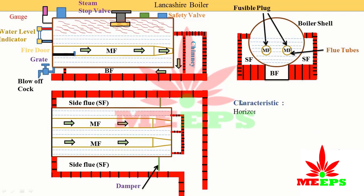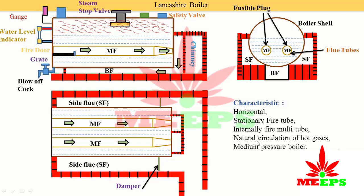Key characteristics of the Lancashire boiler: it is horizontal because its shell is horizontal. It is a stationary fire tube boiler — fire is inside the tube, and stationary means it is not movable. It is internally fired because the furnace is inside the boiler. It is multi-tube because more than one tube — specifically two tubes — is used. Lastly, it has natural circulation of hot gas, meaning the hot gas produced in the furnace is naturally circulated through the boiler and brick construction with no blowers. It is a medium pressure boiler.